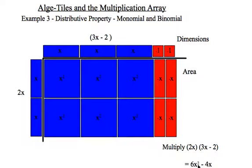So the final result here is 6x squared minus 4x. And if you count them up, that's exactly what we have. And we check the shortcut: 2x times 3x is 6x squared, and 2x times negative 2 is negative 4x.